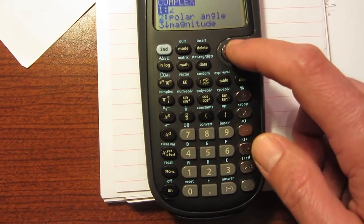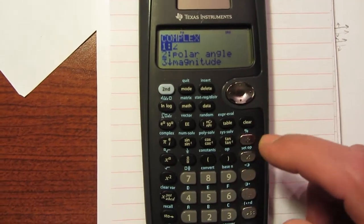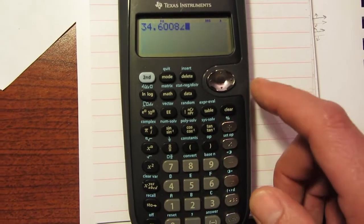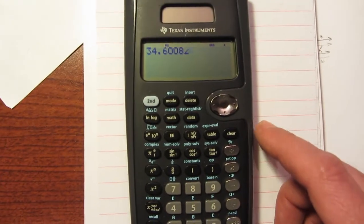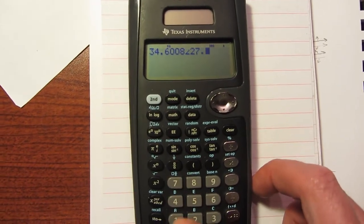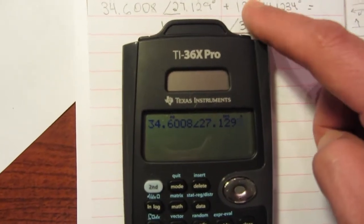Now you can hit enter and that will select it or you just hit one. Boom. There's an angle that's already been put in that for us. Then we can put in our 27.129. That's that first one.